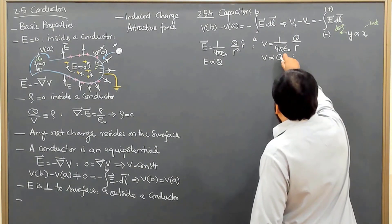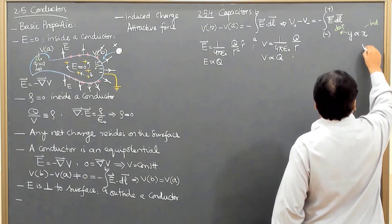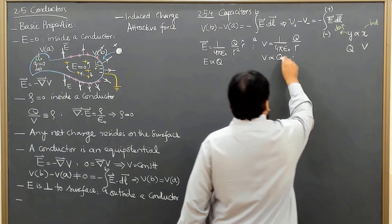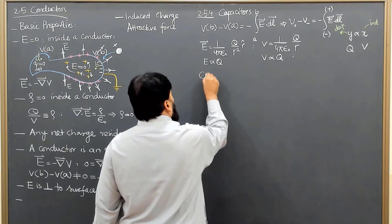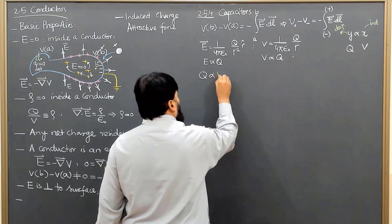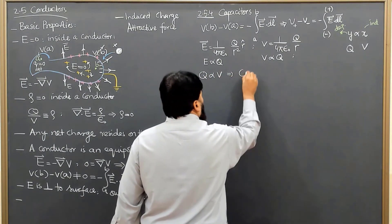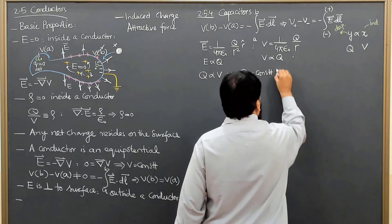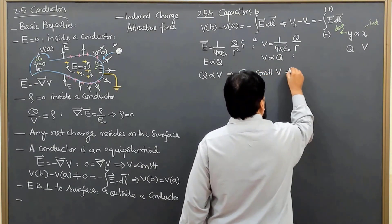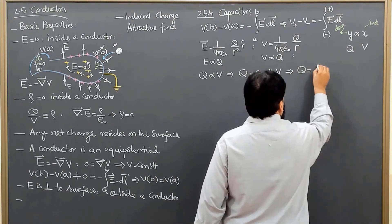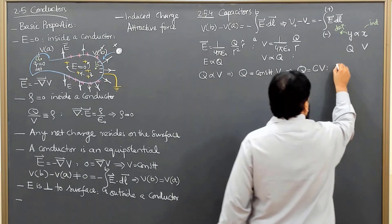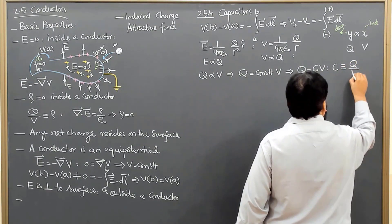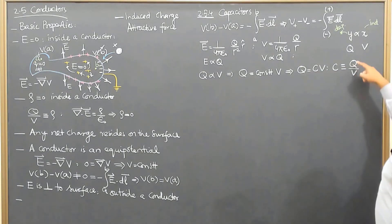It means our independent variable is V and our dependent is Q. So we write Q is proportional to V, which implies Q equals some constant times V. That constant is C, where C is defined as charge per potential. Q over V - C is called the capacitance of the capacitor.